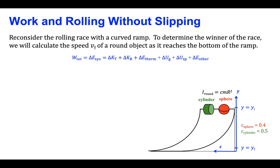Writing down the work-energy theorem, the total work done on a round object can be influenced by six different changes in energy. Four of those changes will be zero. There will be no thermal energy generated between the round object and the ramp because we assume the objects roll without slipping and no kinetic friction will arise. There will be no changes in gravitational potential energy, spring potential energy, or any other outside energy sources.